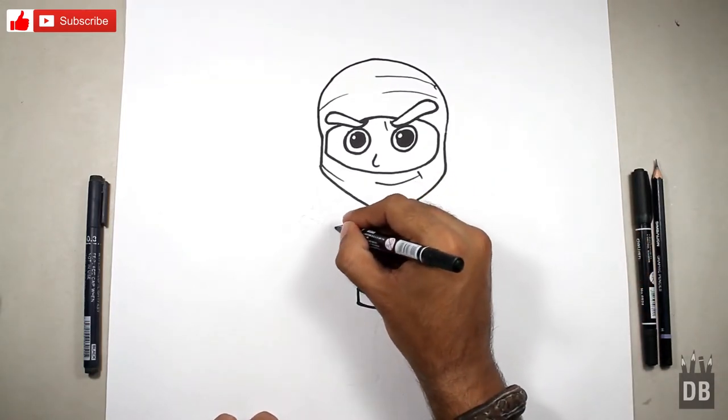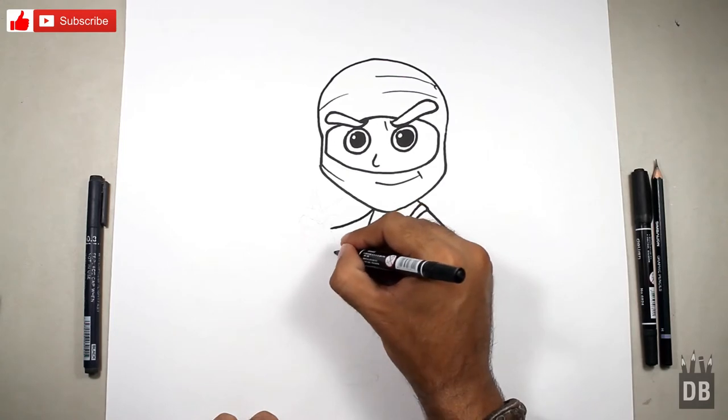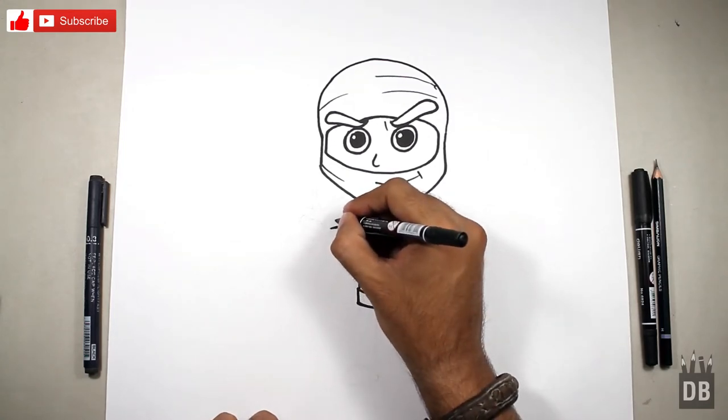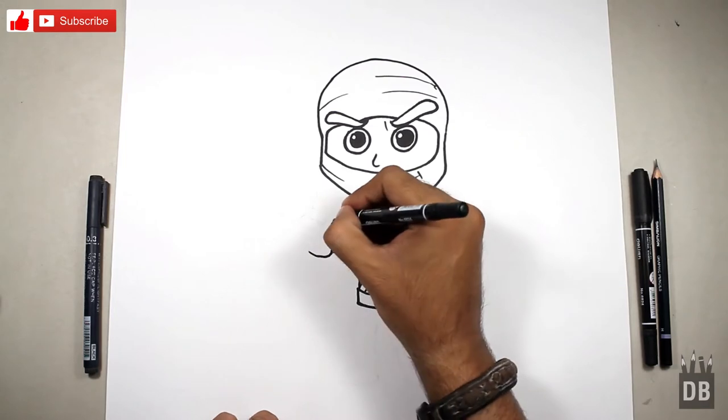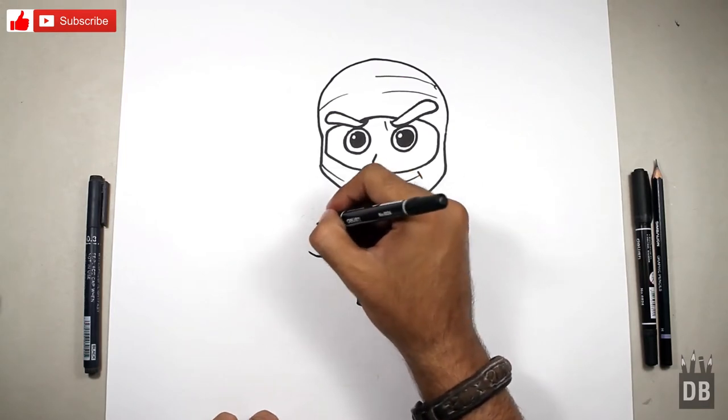For another arm, make a curved line. For the hand, this is for the thumb and fingers.